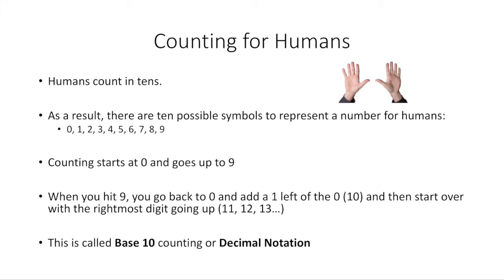Humans count in 10s, which is fitting because we have 10 fingers — that's the origin of the word 'digit.' As a result, there are 10 possible symbols to represent a number: 0 through 9. Counting starts at 0 and goes up to 9; when you hit 9, you go back to 0 and add a 1 to the left.